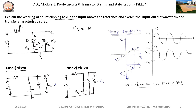Let us assume the input is 4 volts at the positive peak and minus 4 volts at the negative peak. When the input voltage is less than the reference voltage of 2 volts — for example, 0 volts, 1 volt, minus 1, minus 2, minus 4 volts — all these voltages are less than the reference voltage. In such cases, the anode terminal will be at a lower potential compared to the cathode terminal.